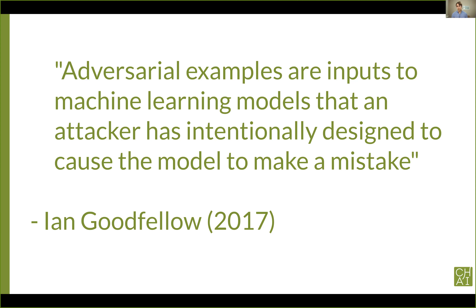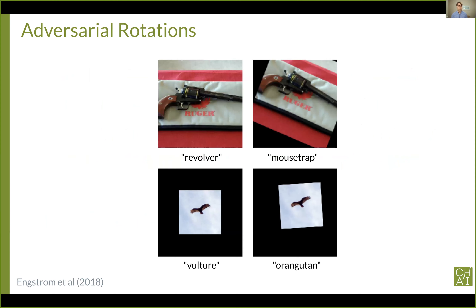I'm going to follow Ian Goodfellow in viewing adversarial examples much more broadly as any input that is intentionally designed to cause a model to make a mistake. There are many ways an attacker could generate an adversarial example — for example, they could rotate clean images. This won't change the true label of most objects, but it does change the image classifier's output in many cases. A revolver turns into a mousetrap with just a 30-degree rotation, which is especially concerning because rotations occur all the time in real datasets, even in the absence of any adversary.